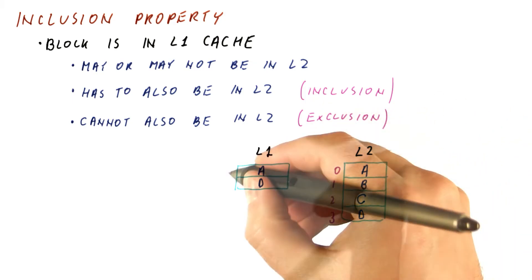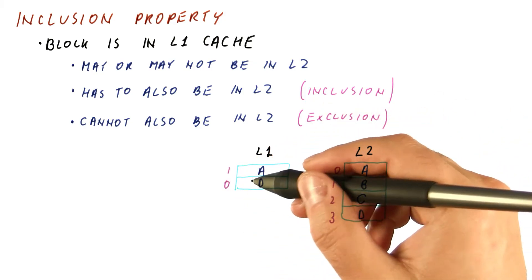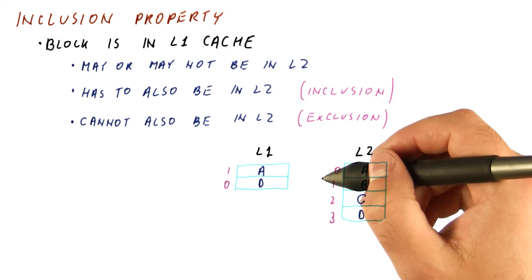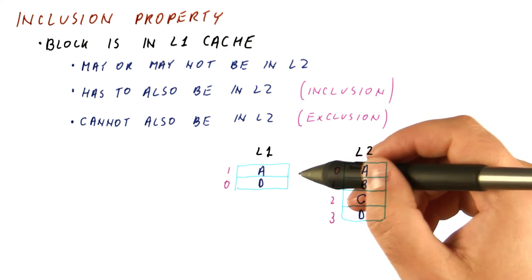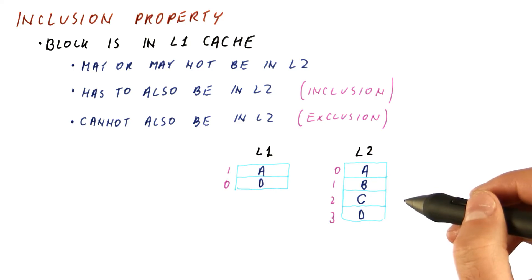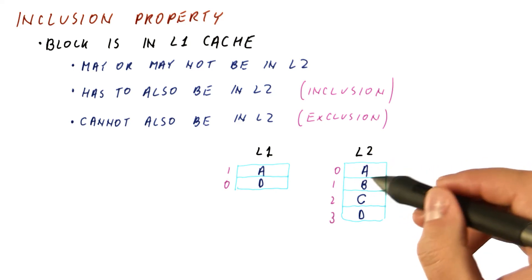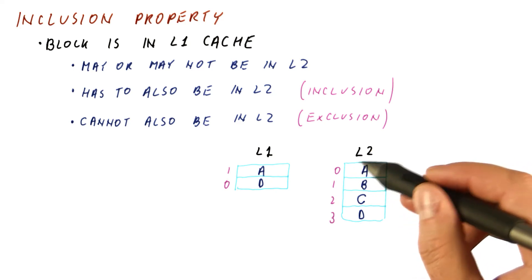Now let's say A is accessed again. Now we have the counters again, one, zero. Let's say now E is accessed. It's a miss in both caches. We bring E in. And now in the L2 cache, it replaces the least recently used block, which is A.